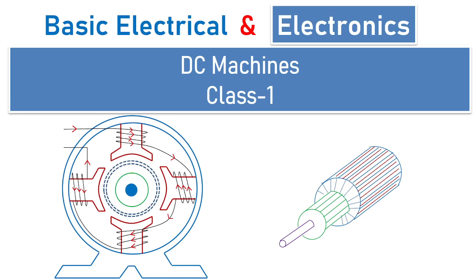Welcome to a new session of basic electrical and electronics engineering, in which we are going to see DC machines in class one. We will cover constructional details as well as the EMF induced or the current produced in a DC machine, which is familiar in electrical machines and electrical technology for different streams of engineering. We will see only the basic concepts involved with the constructional details of a DC machine, which is common to all branches of CSC — IoT, AIML, Data Science, and IT.